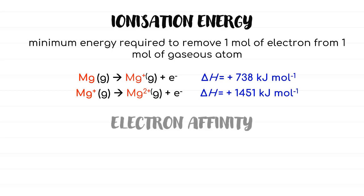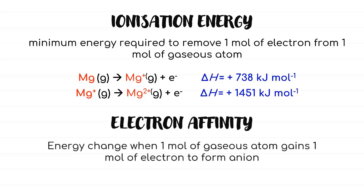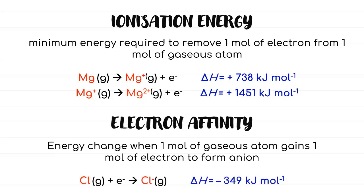Next is electron affinity. If ionization energy is the energy required to remove electrons, electron affinity is the opposite — it is the energy required for 1 mole of gaseous atoms to gain 1 mole of electrons. For example, we start with a chlorine atom in the gaseous state. Chlorine has a −1 charge, so it will gain an electron to form Cl⁻.